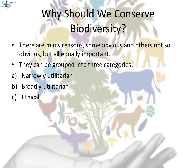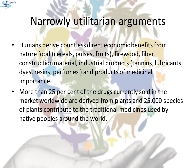Why should we conserve biodiversity? There are many reasons, grouped into three categories: narrowly utilitarian, broadly utilitarian, and ethical. The narrowly utilitarian arguments are obvious — humans derive countless direct economic benefits from nature: foods like cereals, pulses, fruits; firewood, fiber, construction material; industrial products like tannins, lubricants, dyes, resins, perfumes; and products of medicinal importance. More than 25% of the drugs currently sold worldwide are derived from plants, and 25,000 species of plants contribute to the traditional medicines used by native peoples around the world.